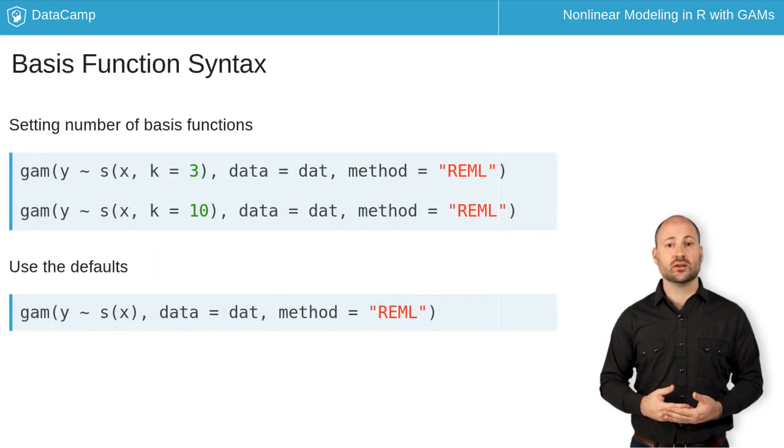To set the number of basis functions in a smooth, we use the k argument in the smooth function in a GAM formula. Setting this value too low will prevent the model from being sufficiently wiggly. If it's high though, the automatic smoothing parameter selection will prevent it from being too wiggly. We just don't want to set it very high, which can result in a model with more parameters than data, or one that is slow to fit.